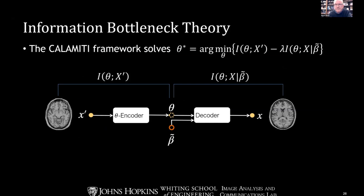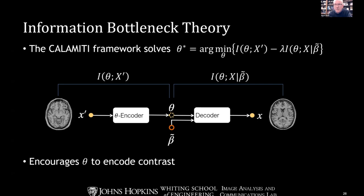Leon Ray found that this was solving an information bottleneck theory problem. The idea is: if X prime comes in — a slice without the same anatomy as the desired reconstruction slice — you want to reduce the information kept in the theta variable. We know theta should only represent contrast. On the decoder side, with anatomy available (conditioned on knowing beta tilde), you want to use all theta information to restore the full contrast into the recovered image. It's a matter of minimizing mutual information between the input image and theta, and maximizing the information between theta and the desired reconstruction. This encourages theta to be small and encode only contrast.